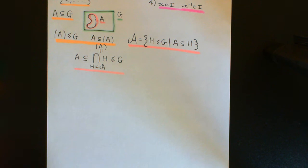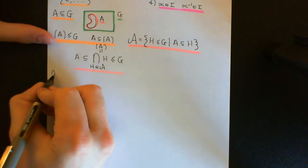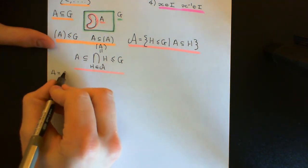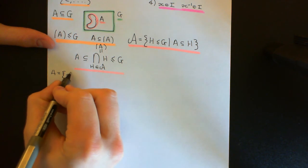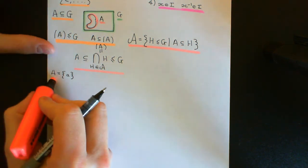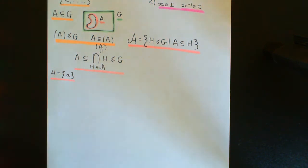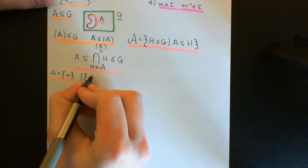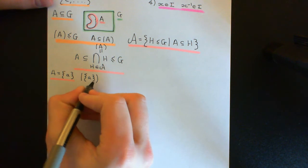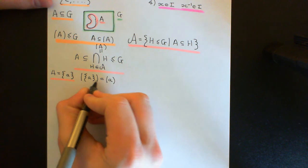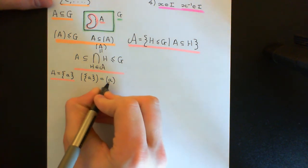So firstly, a little bit more nomenclature. If this subset A is very simple, then we have different ways of denoting the subgroup generated by the subset. If the subset contains just a single element of the group — let's say it contains little a — then instead of writing the subgroup generated by the subset that contains a, we just write the subgroup generated by the element a. We omit the set brackets.